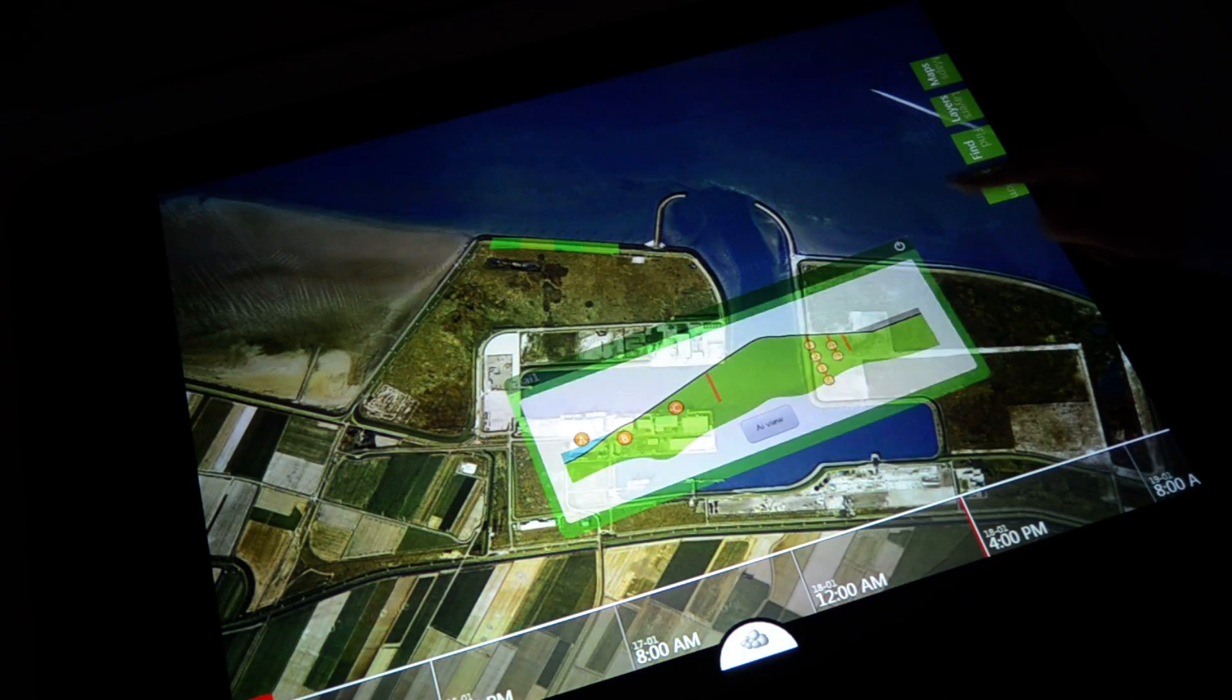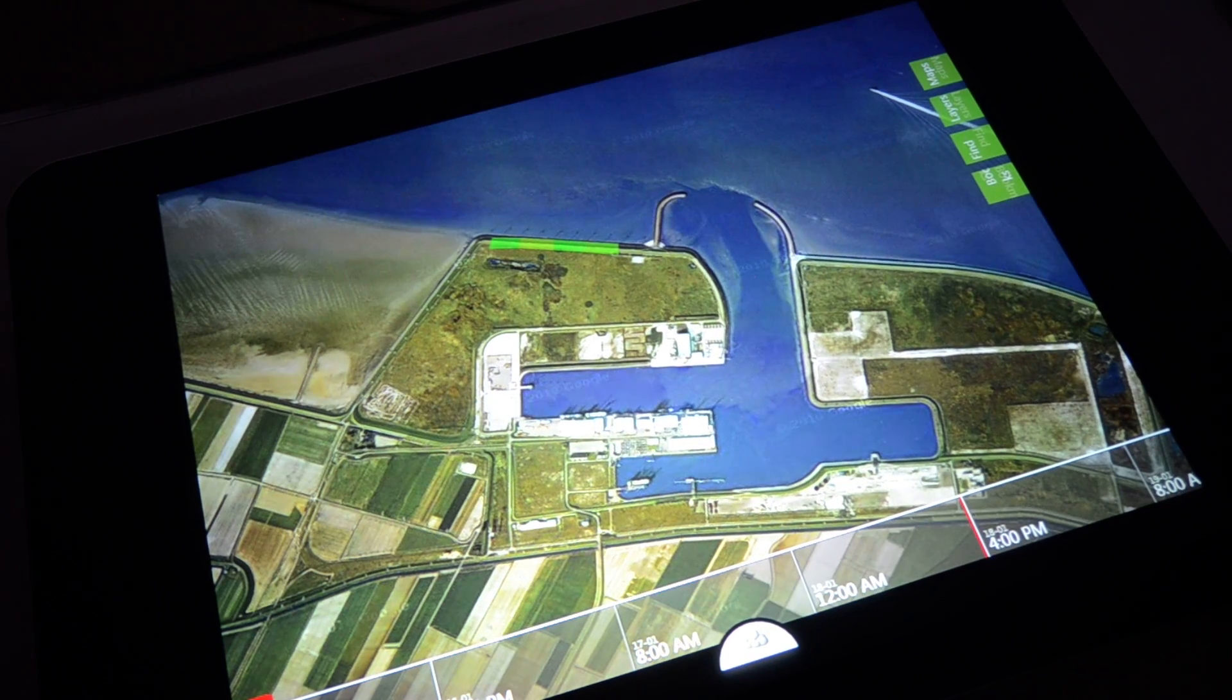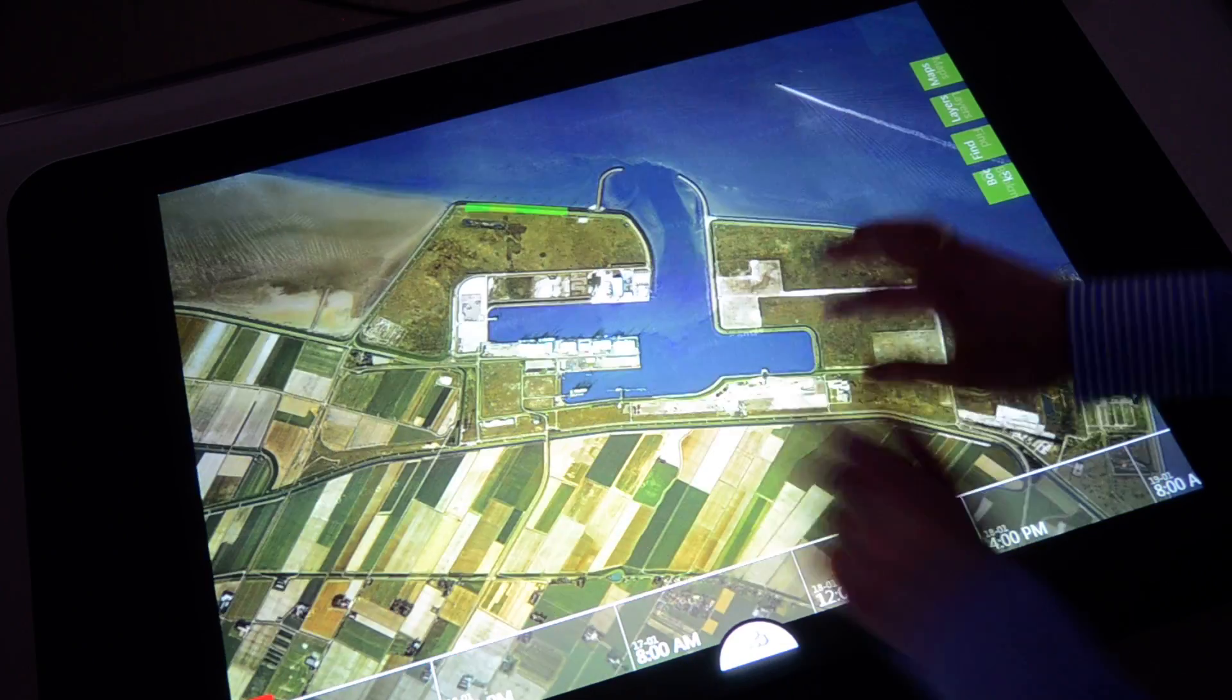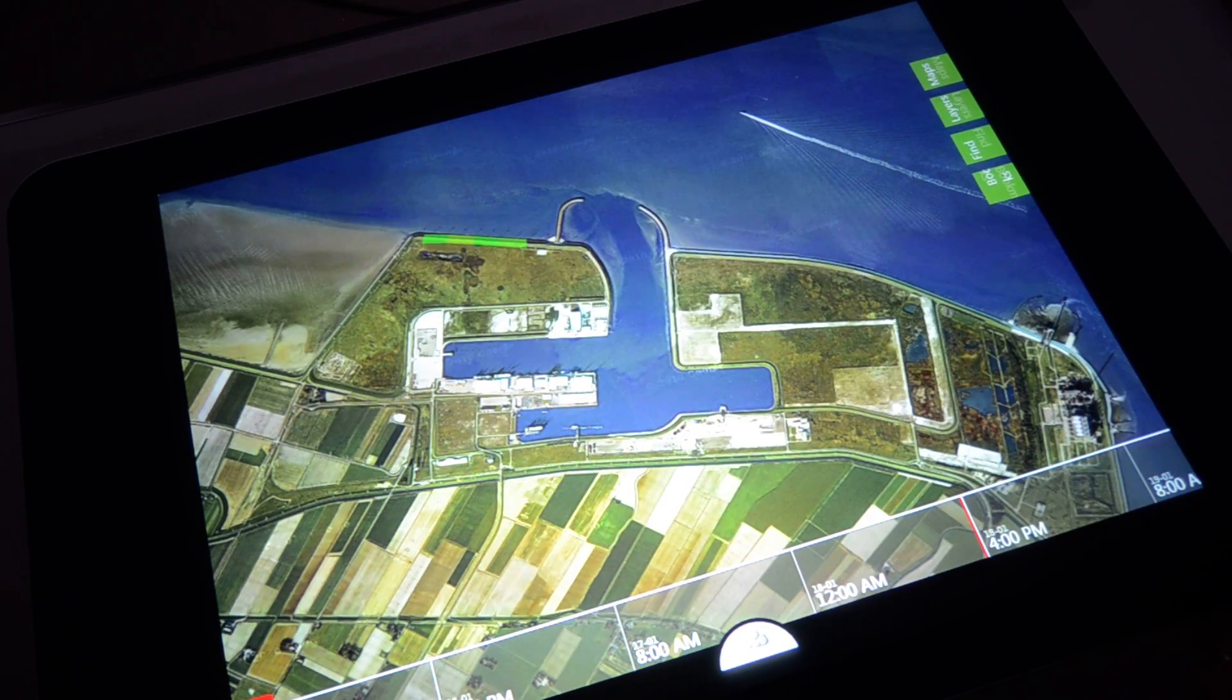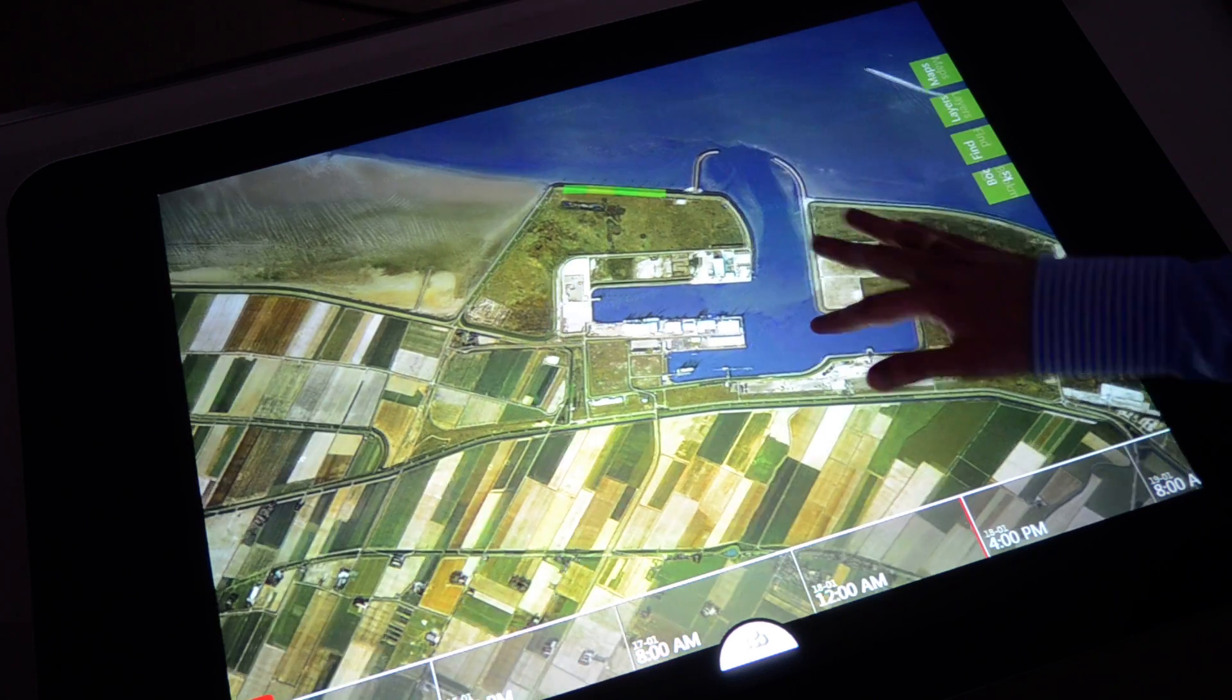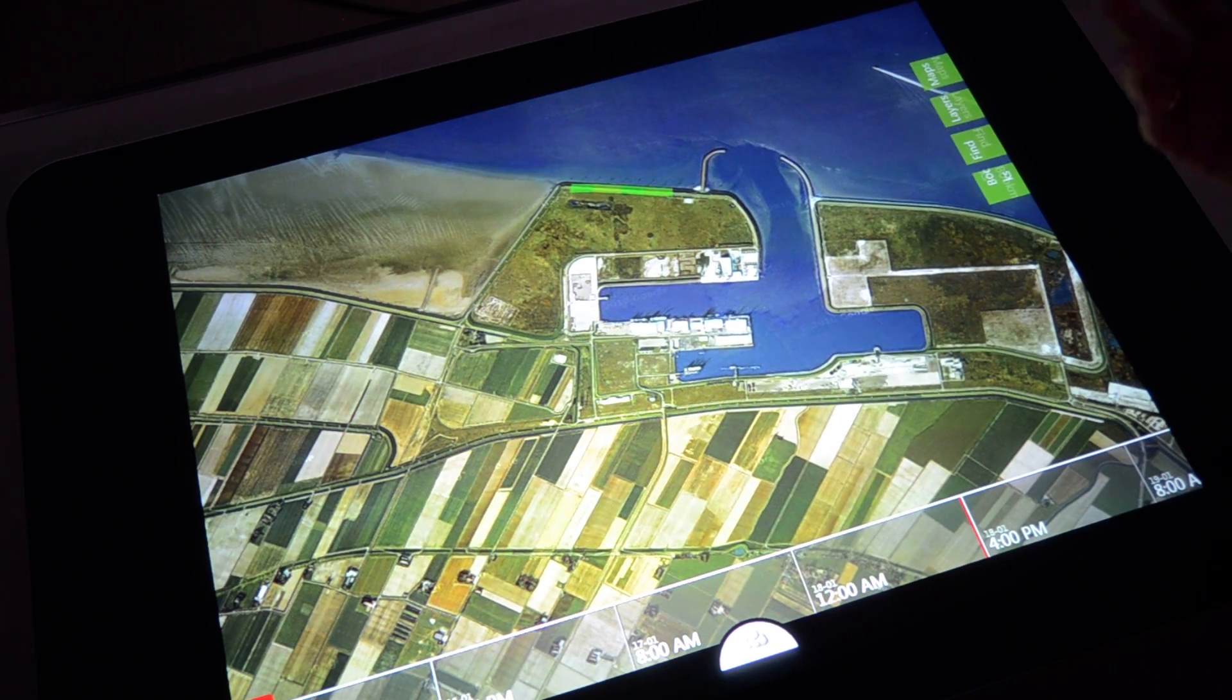Another thing we can do with this system is, in a crisis situation where there are multiple people all touching the table at the same time or browsing through the map, when you have a discussion on what if maybe this dike is suddenly red.